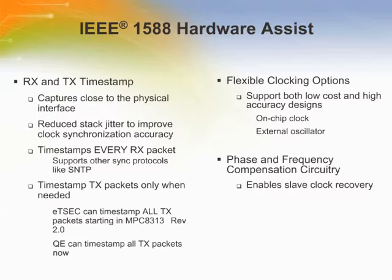The hardware assist features available with the MPC8313E processor include RX and TX timestamp capture close to the physical interface, which reduces stack jitter and improves clock synchronization accuracy. Every RX packet and only necessary TX packets are timestamped. The flexible clocking options support both low cost and high accuracy designs with an on-chip clock and an external oscillator, while phase and frequency compensation circuitry enables slave clock recovery.